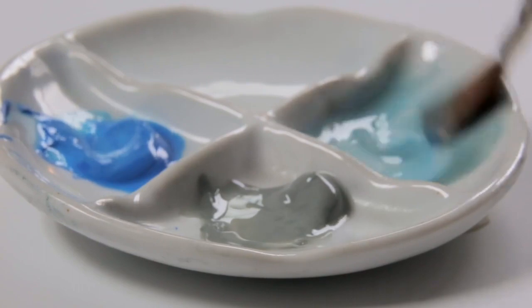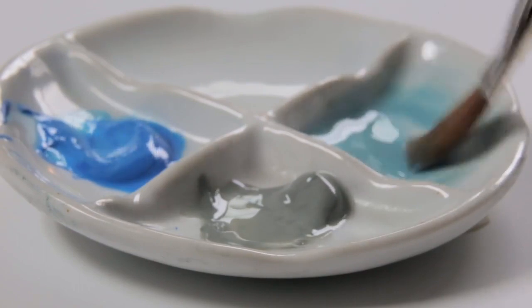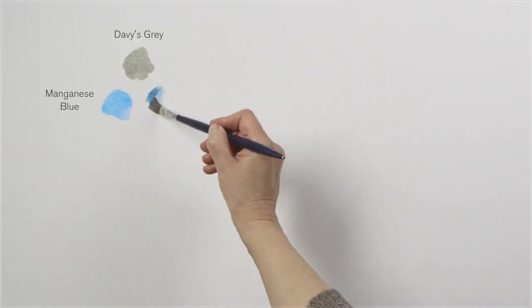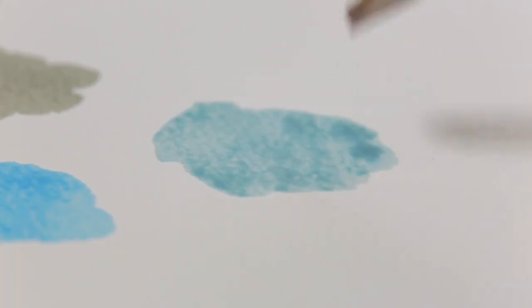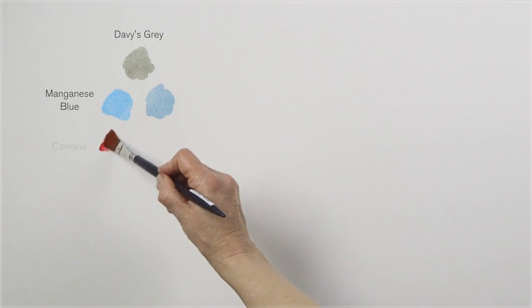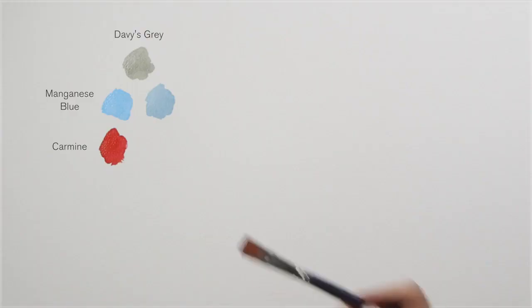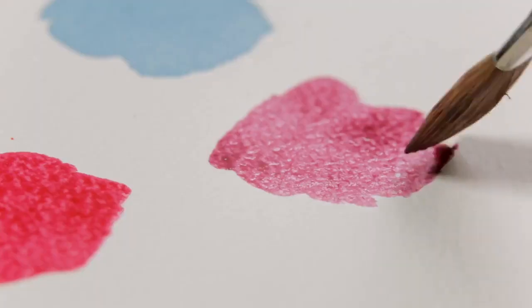Now look what happens to the manganese blue when I add Davies Grey to it. Now look at the way it alters the carmine.